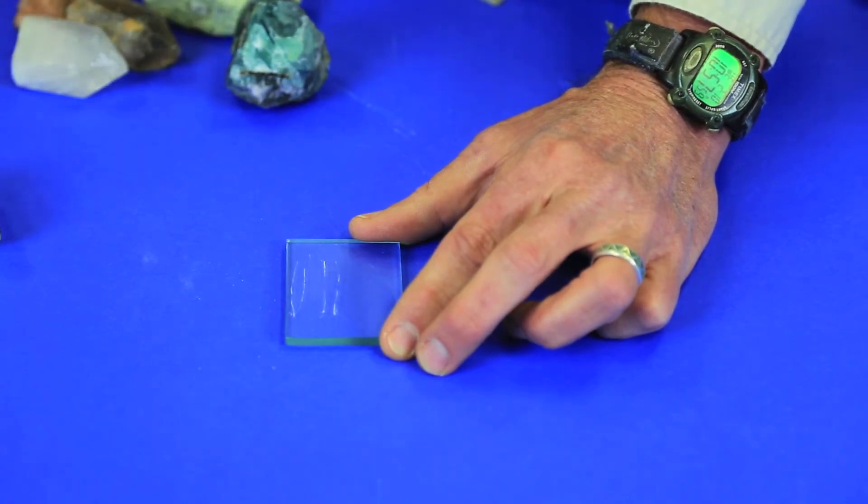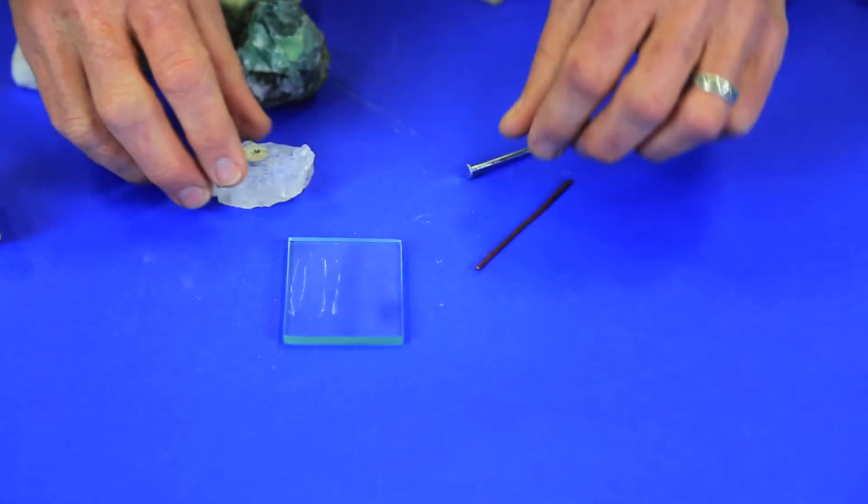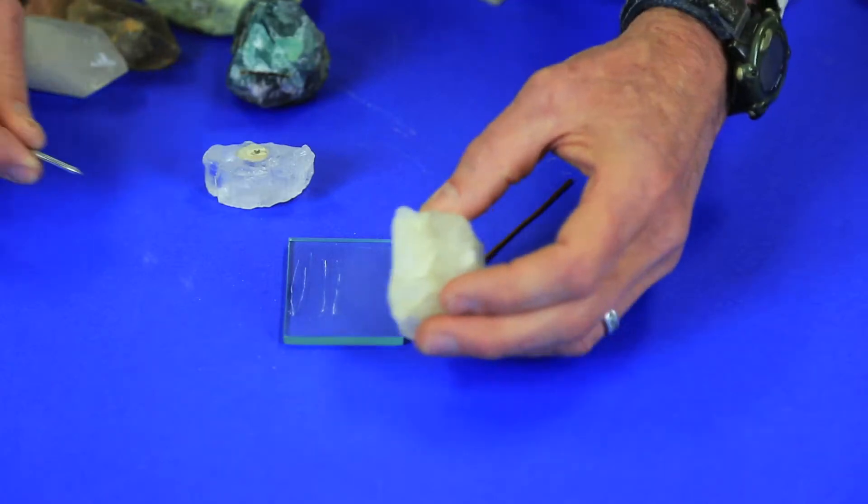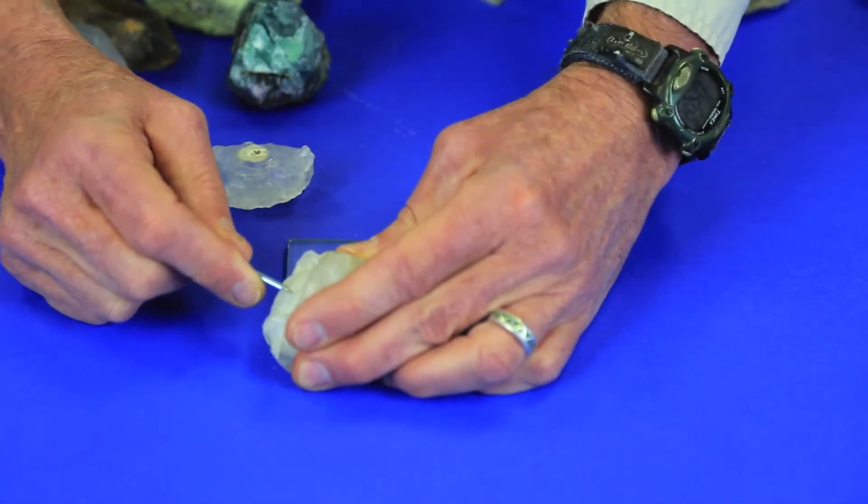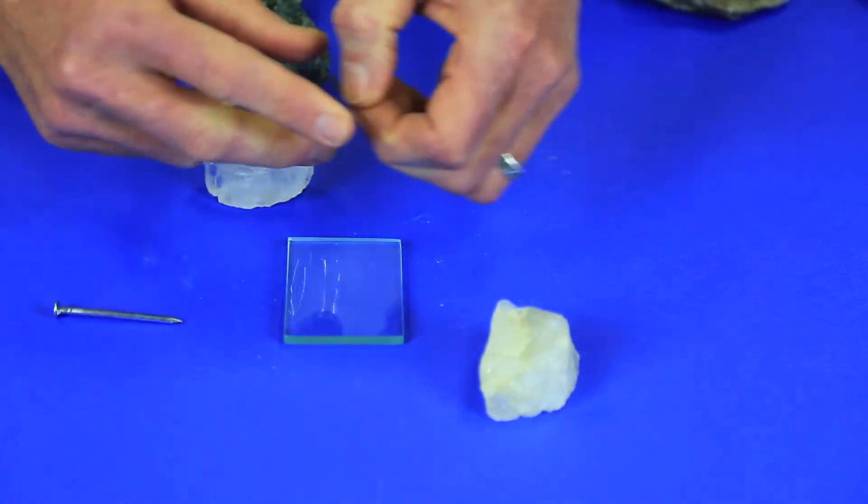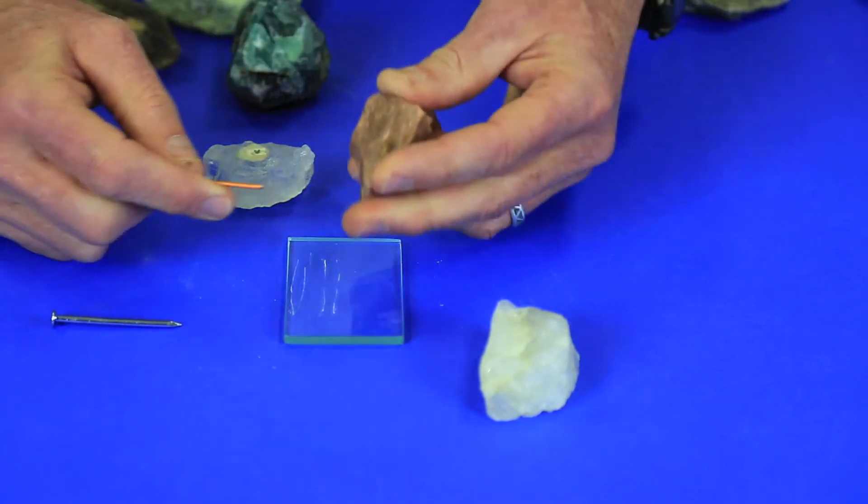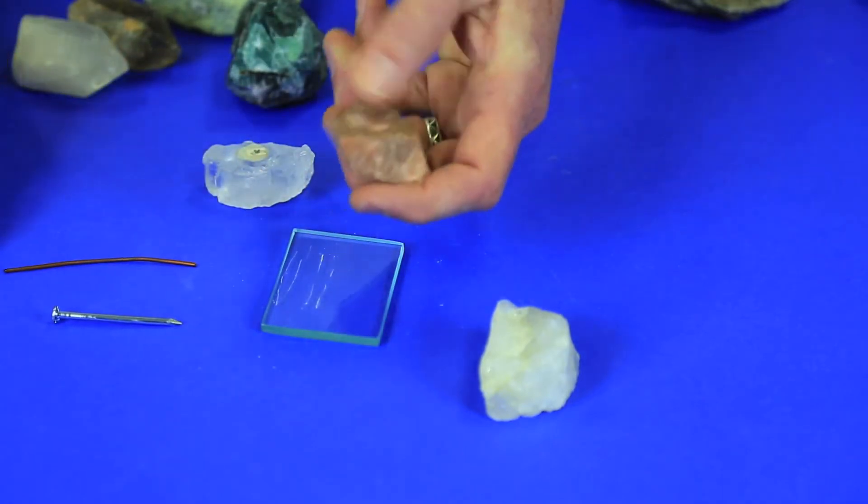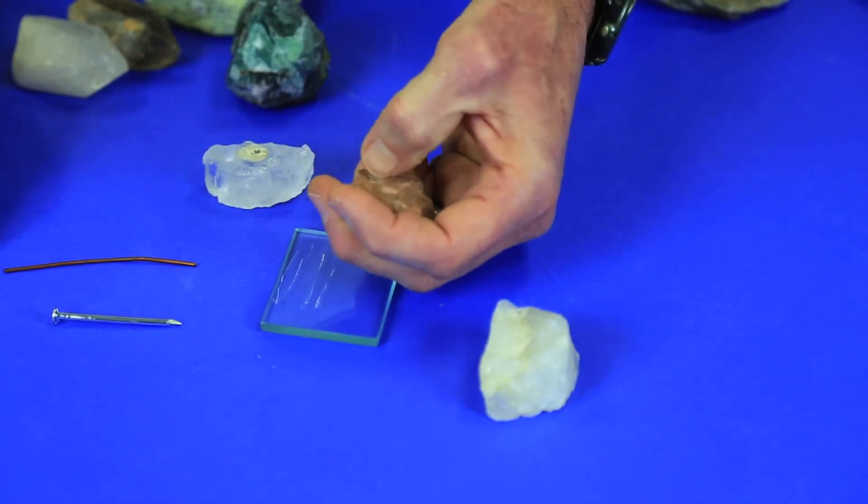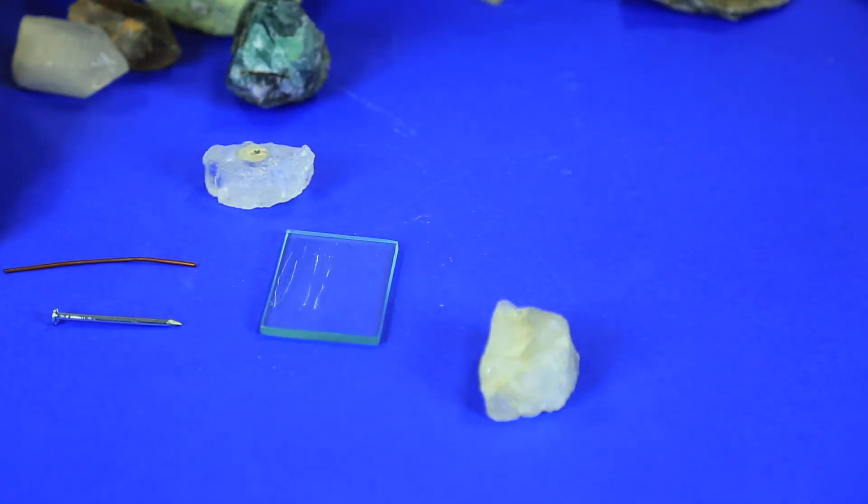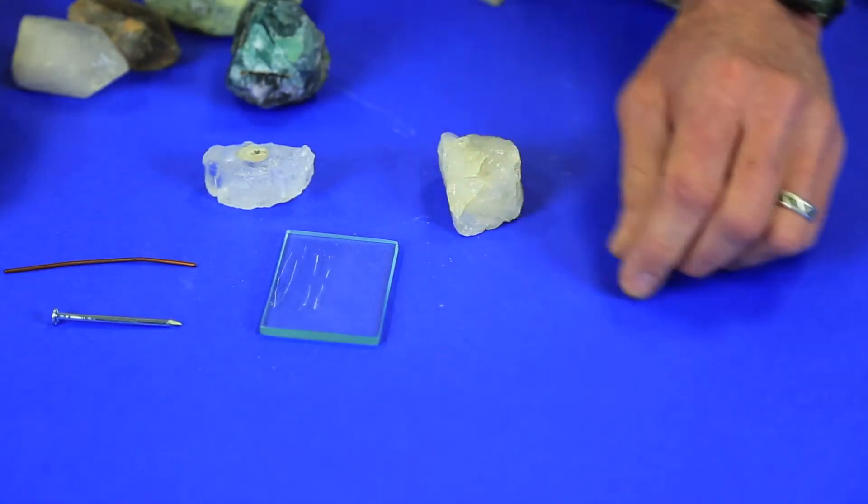The other items in your kit that can be used to test for hardness are all softer than five and a half on Mohs scale. The nail is at five or four and a half on Mohs scale. The piece of copper is about three, and finally your fingernail is about two and a half on Mohs scale. So for a mineral sample that does not scratch the glass plate, you can try to narrow its hardness down by using the nail, the copper wire, or your fingernail.